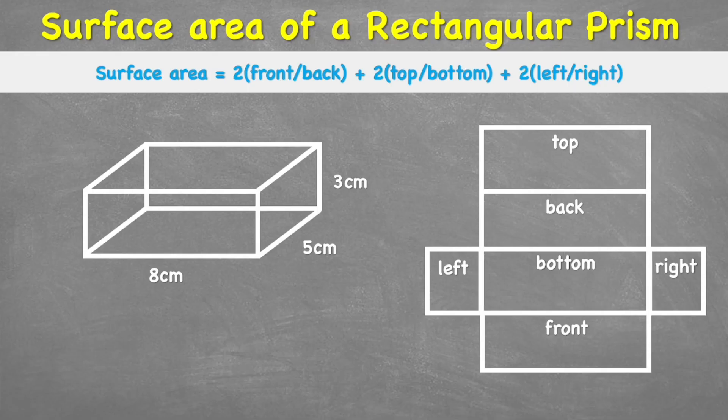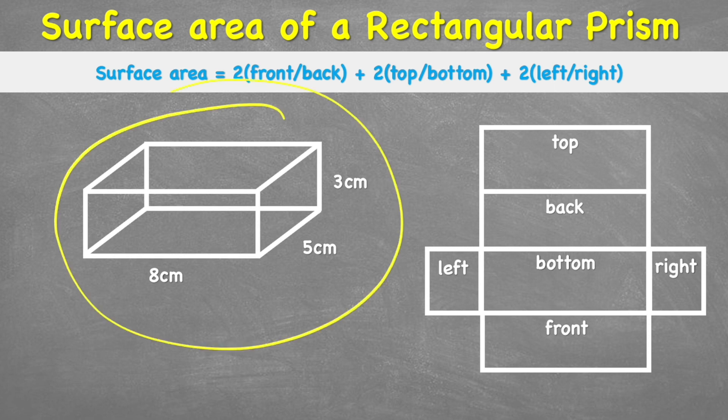So first, what is a rectangular prism? Well, it is a 3D shape that's bound, which means joined by six rectangular faces. So we can see all these faces on this example here.